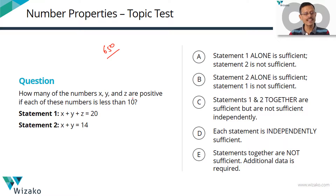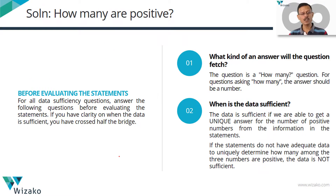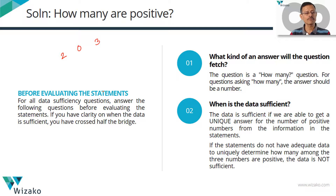How many of the numbers x, y and z are positive? Each of these numbers is less than 10 — that's crucial information. We need to determine how many of x, y and z are positive.